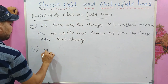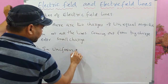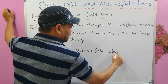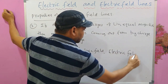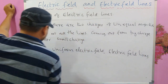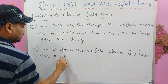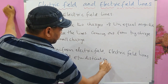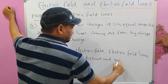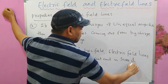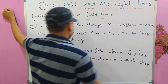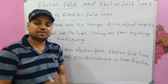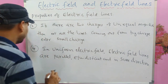Fourth property: in a uniform electric field, electric field lines are parallel, equidistant, and in the same direction.